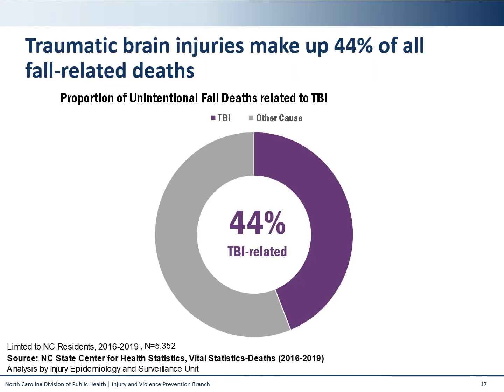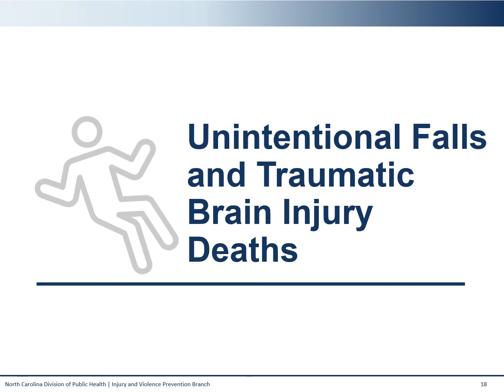Falls and TBI have a clear linkage, with 44% of fall-related deaths having an association with a traumatic brain injury. Because falls are a leading mechanism for TBI deaths and TBI is a large outcome of unintentional falls, we wanted to examine rates of TBI among different age groups. This relationship is a focus of core injury work in the branch, and preventing falls can help prevent TBI. Because of this association between falls and TBI, we will now explore trends in TBI by age group and demographic, starting with deaths.